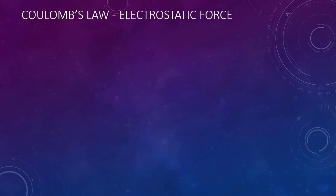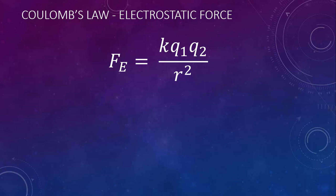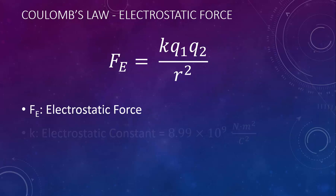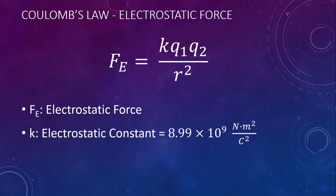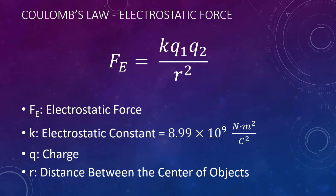We can put these two relationships together with a constant to form Coulomb's law equation: Fe equals k q1 q2 over r squared. Fe stands for electrostatic force, measured in newtons. K is the electrostatic constant, equal to 8.99 times 10 to the 9 newton meters squared per coulomb squared — found on the first page of your reference tables. Lowercase q is the abbreviation for charge; q1 and q2 refer to the charges of object 1 and object 2. R stands for the distance between the centers of the objects, just like the r in the universal law of gravity.